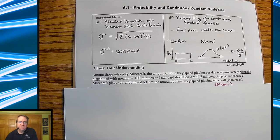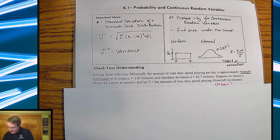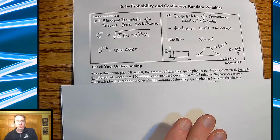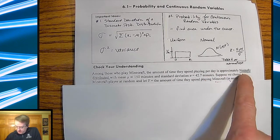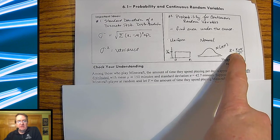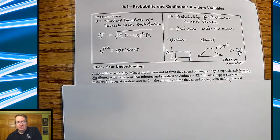Suppose we choose a Minecraft player at random and let Y be the amount of time they spend playing Minecraft in minutes. So with that, knowing that since we're talking about normal distribution, you're probably going to end up having to use your Z formula here. Take a second, fill some of this out.